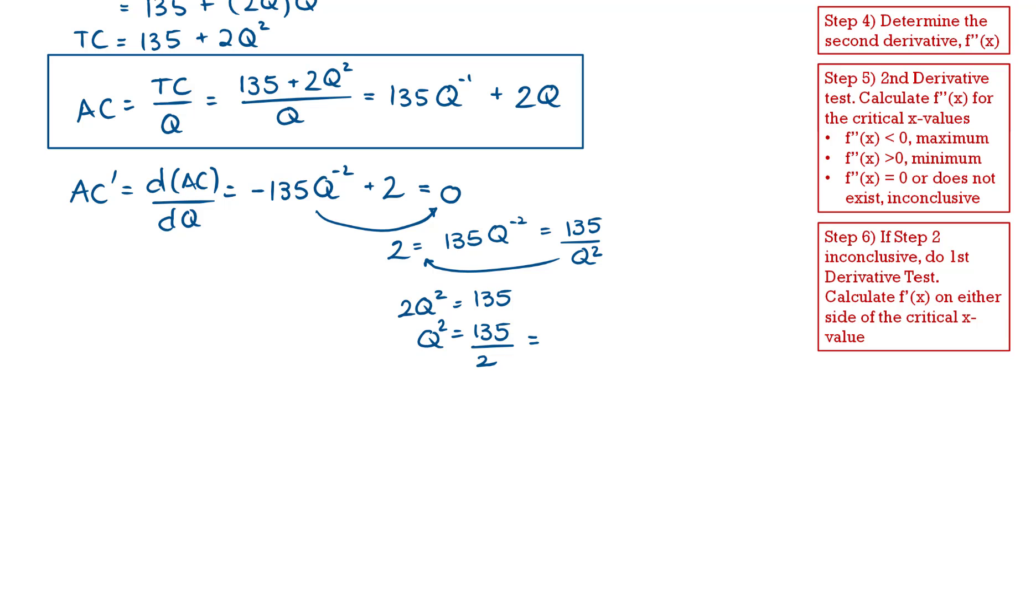So that's going to give me 67.5. I take the square root of both sides and I get Q is equal to plus or minus 8.216.